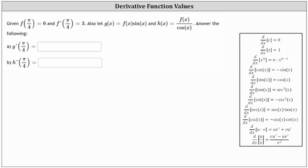We were given f of pi divided by four equals six, f prime of pi divided by four equals three, g of x equals f of x times sine x, and h of x equals f of x divided by cosine x. We're asked to determine g prime of pi divided by four and h prime of pi divided by four.